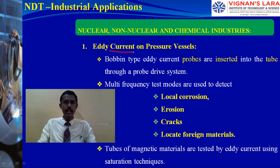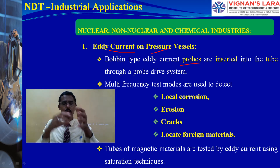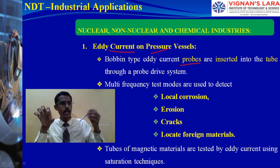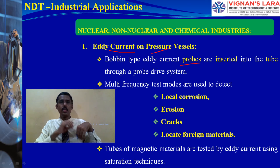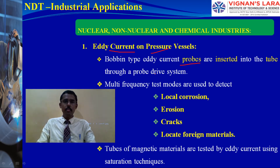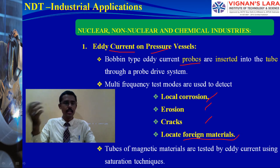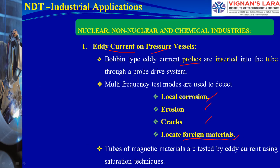For eddy current testing: a bobbing-type eddy current probe is inserted into the tube through a probe drive system. Based on the primary and secondary fields, eddy currents are generated. Multi-frequency test modes are used to detect local corrosion, erosion, cracks, and foreign materials or dust particles present inside. Tube magnetic materials are tested by eddy current using saturation techniques.